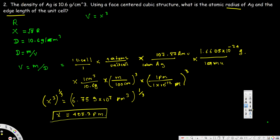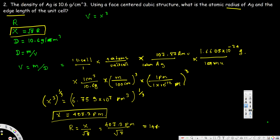Now the second part asks for the radius. We know that for a face-centered cubic structure, x equals the square root of 8 times r. So r equals x divided by the square root of 8. With x equal to 407.3 picometers, dividing by the square root of 8 gives approximately 144 picometers. So the atomic radius r equals 144 picometers. That's how we solve this kind of problem.